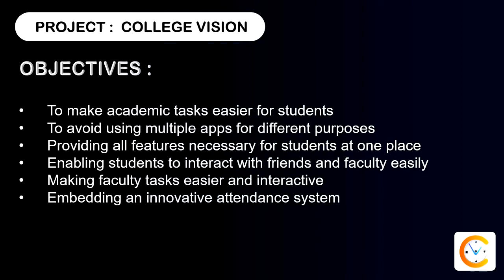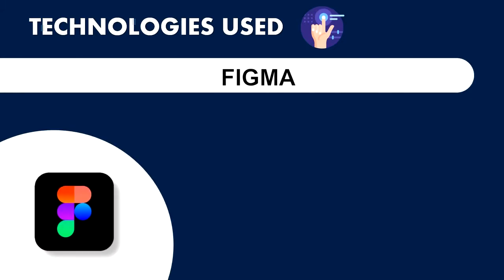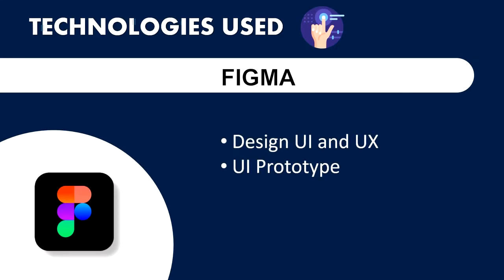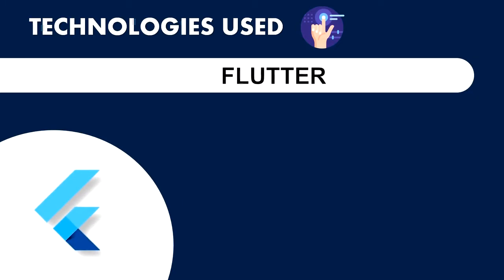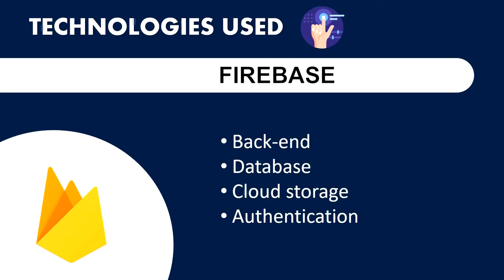In order to reach our objectives, we made an app called College Vision. In the process of making this Android application, the technologies we used are: First, Figma — used to design the basic layout and find out various components of the application. Second, Flutter — used to build the frontend and the logic inside the application using the Dart language. Third, Firebase — used as a backend, which provided functionalities like database usage, cloud storage, authentication, etc.